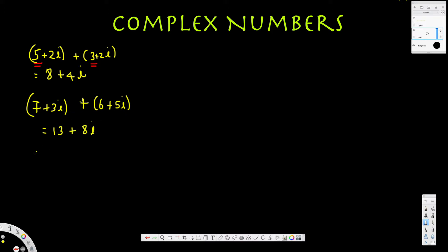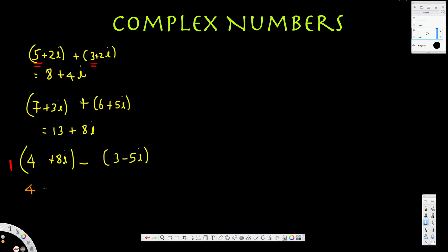Now let's try subtraction. We have 4 plus 8i minus (3 minus 5i). When you subtract, you have to be careful — there's a negative 1 being distributed. So negative 1 times 3 is negative 3, and negative 1 times negative 5i is positive 5i. Adding like terms: 4 minus 3 is 1, and 8i plus 5i is 13i. So the answer is 1 plus 13i.